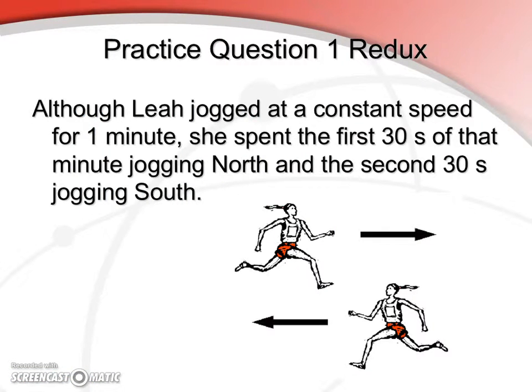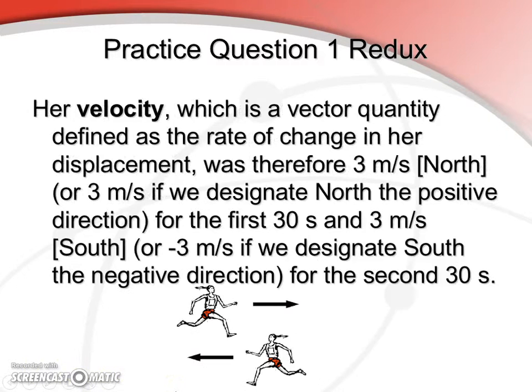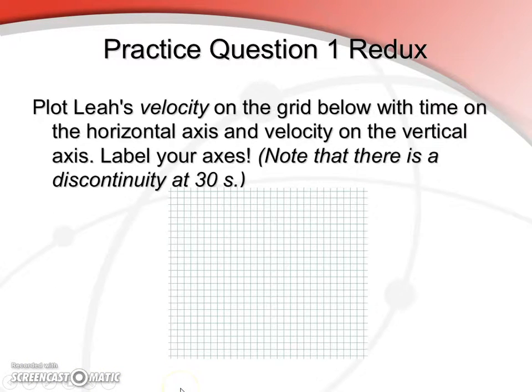Alright, so let's discuss this problem a bit more. So if we define our axes, we have our velocity in meters per second, our time in seconds. And of course, in this case, because we are running north for the first 30 seconds, we have a positive velocity. And we're running south for the last 30 seconds, and we've got a negative velocity. So this is what your graph should look like here.